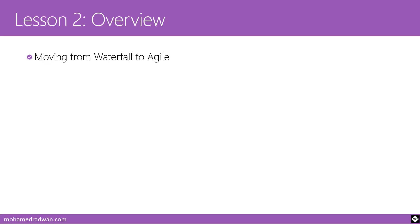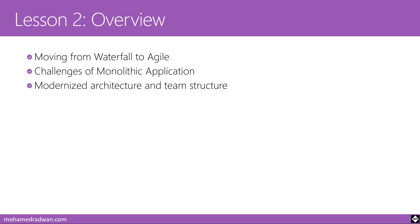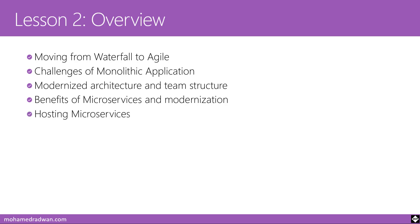Let's start module one, lesson two: Understanding Application Modernization. This lesson will cover moving from waterfall to agile — we'll understand what happened when companies moved from the waterfall methodology to agile and how this reflected on software delivery. Then we'll understand the challenges of the monolithic application impacted by agile, and then the modernized architecture and team structure.